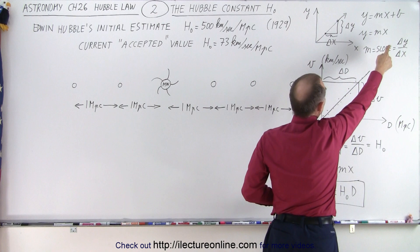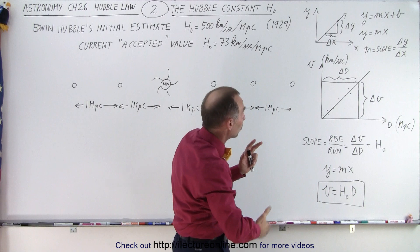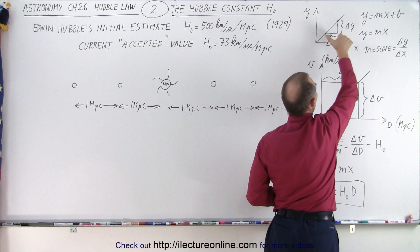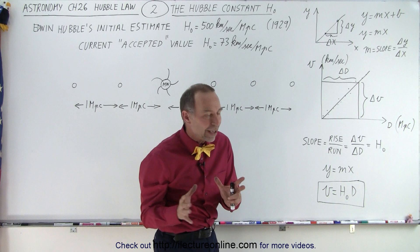And so just like we have an algebra equation, y equals mx plus b, and of course if the line goes right to the origin we simply say y equals mx, a relationship between the vertical and the horizontal axis, and the slope of that line. The slope of the line is simply equal to the ratio of the rise over the run, the change in y over the change in x.